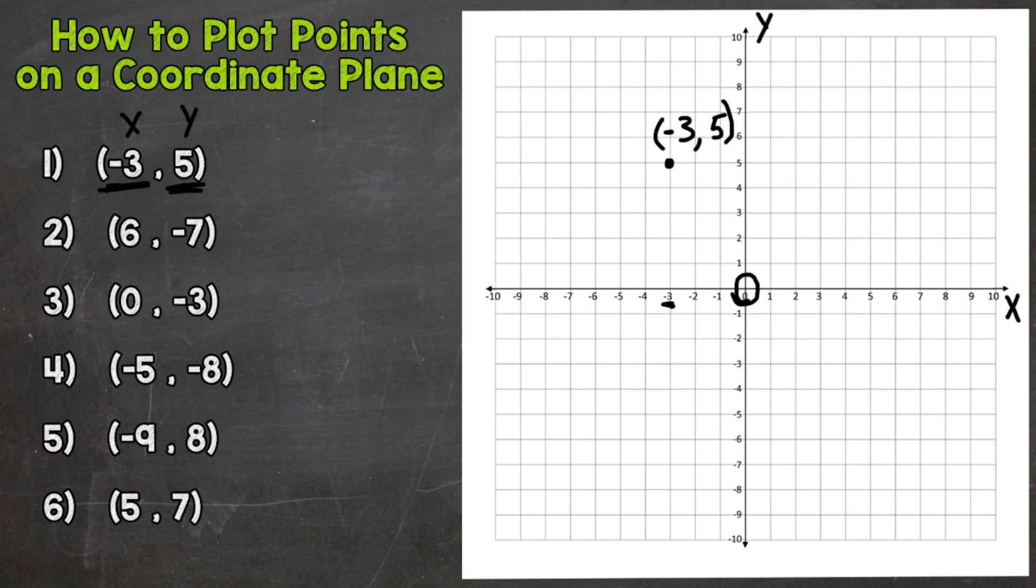So let's go to number 2. Our x is a positive 6. And then we need to go down to negative 7. So we start at our origin in the center and we go over 6. So we find our positive 6 here. And now we need to go down negative 7.